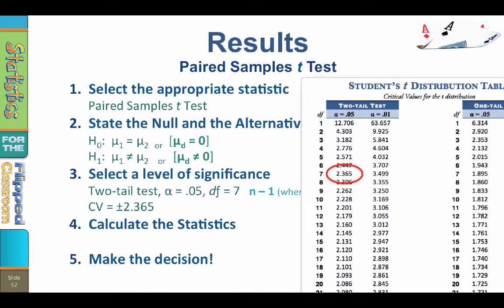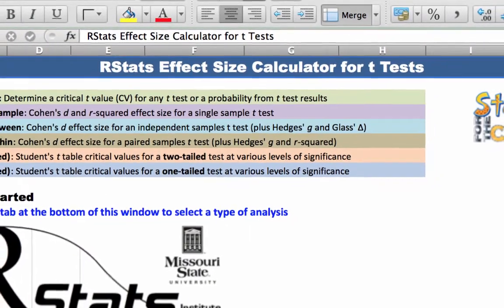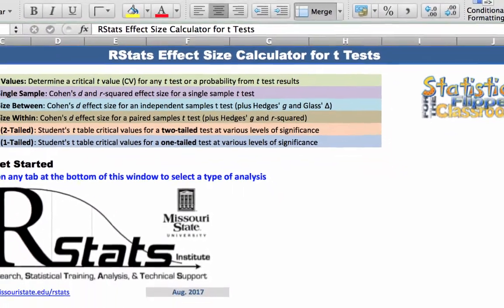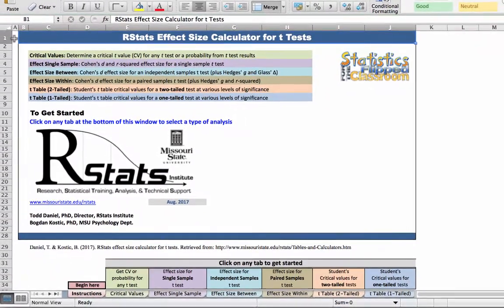So any t-values exceeding 2.365 indicate that the sample of puppies being trained with clicker training was statistically significantly different than the puppies being trained with food reward training. Alternatively, you can download the rStats effect size calculator for t-tests and use it to determine your critical value.